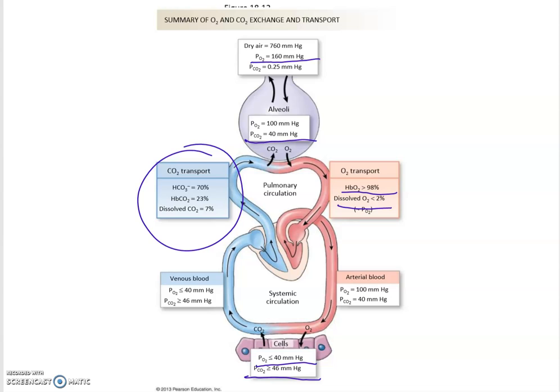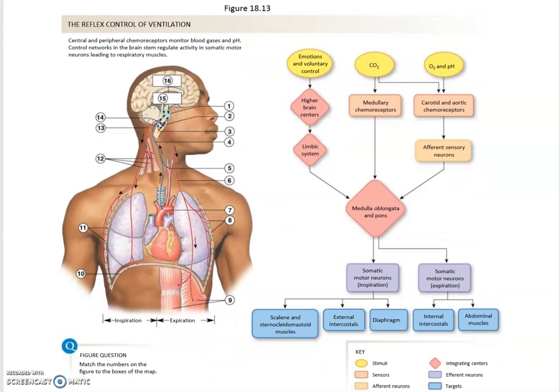The CO2 transport summary is right here where the vast majority is carried as bicarbonate, then we have 23% as carbaminohemoglobin, and about 7% dissolved as gas in plasma. Now let's take a look at the reflex control of ventilation. In the brain stem you have your cardiovascular and respiratory control centers, and they are the masters of your next breath and also of your heart rate. In the medulla oblongata and in the pons region you have these cardiovascular control centers.